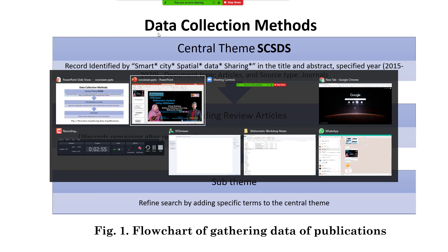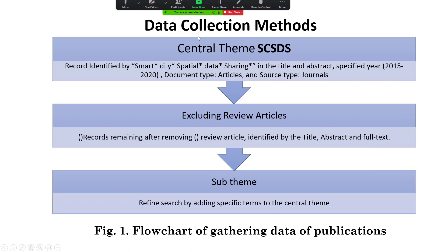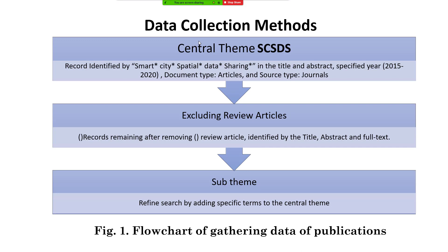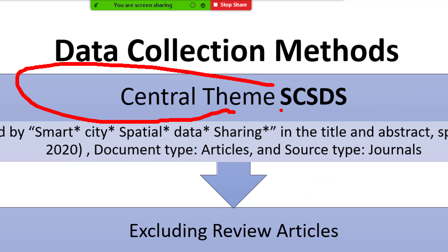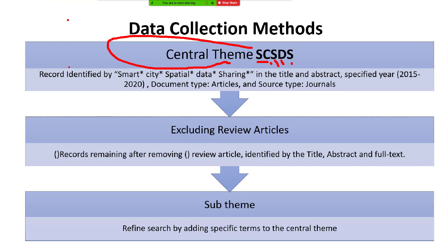First, we must understand how to collect the data. For bibliometric analysis, you must start with data collection. You need to identify central themes — for example, my theme is smart city and spatial data infrastructure, so I search for smart city, spatial data sharing, and so on.